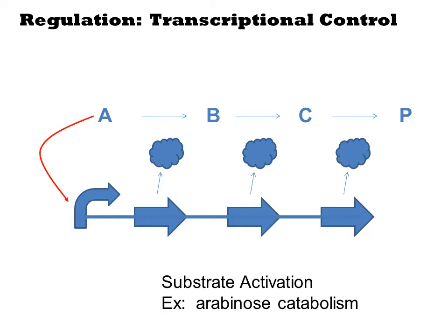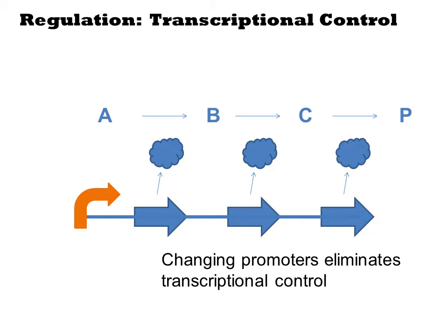The opposite situation could also occur in which the product or an intermediate activates transcription. For example, the genes involved in arabinose catabolism are activated by the first chemical, arabinose. The possibility for transcriptional control can be easily eliminated by replacing the promoter with an unrelated one, such as a constitutive promoter. This breaks the link between the chemicals being generated and the activity of the promoter.